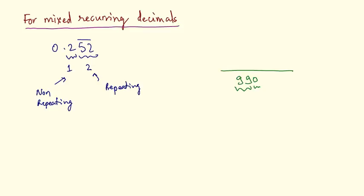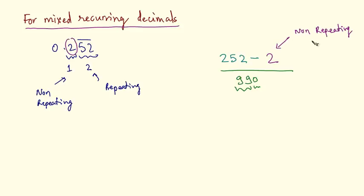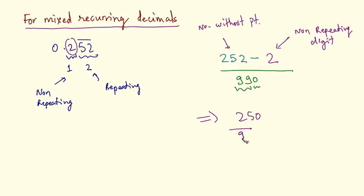The number without the decimal point is 252, then subtract the non-repeating digit, which is 2. So the numerator is 252 minus 2. This gives 250 over 990, and cancelling the common zero gives 25 by 99. That is the simple fraction for 0.252 with 52 repeating.